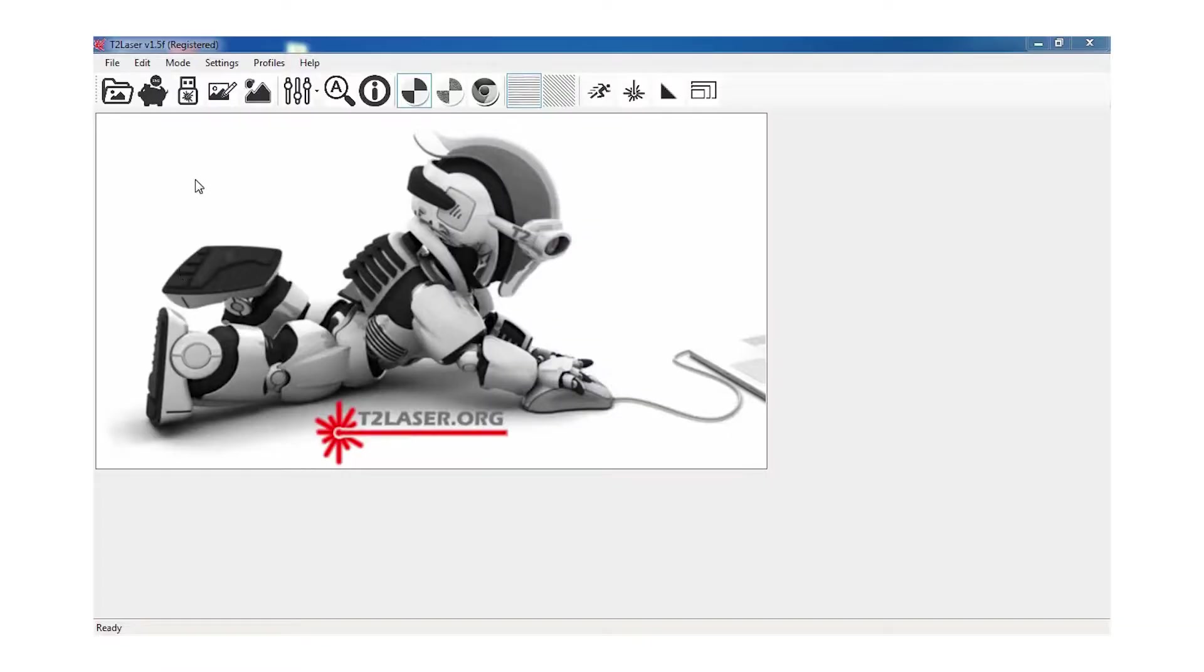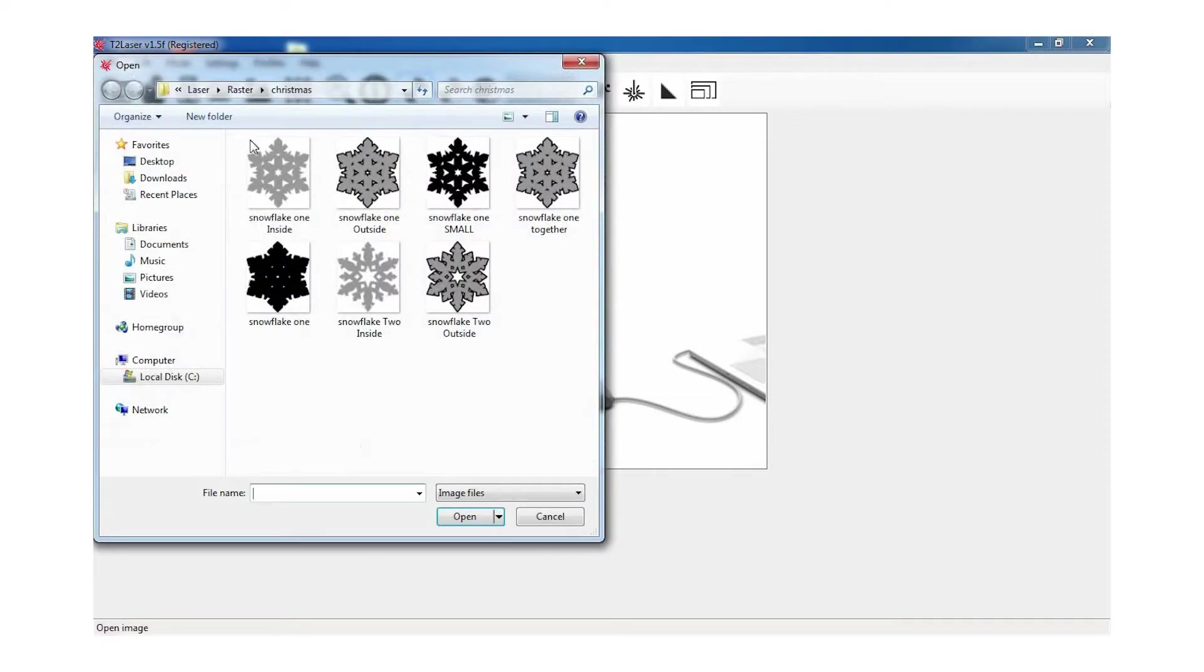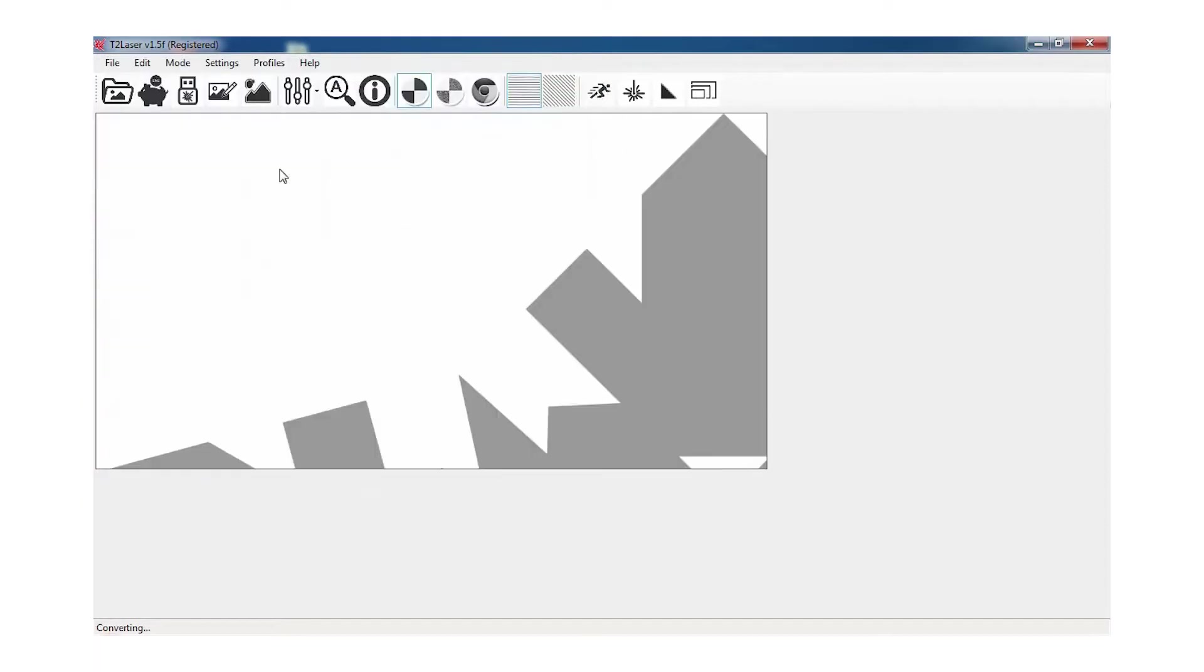The first thing we're going to do is set up our software to cut the snowflakes. I'm using T2 Laser; you can of course use whatever software you like. The snowflakes are done with two smaller outside pieces sandwiched in between a larger inside piece.